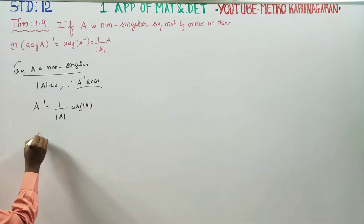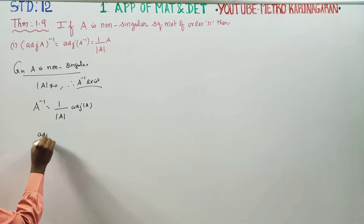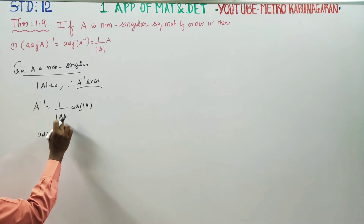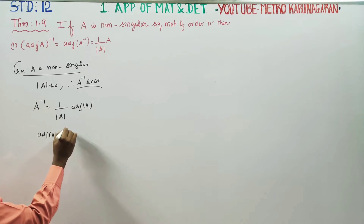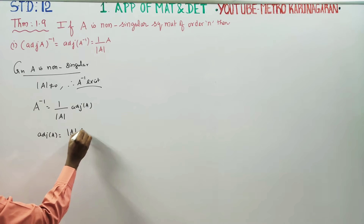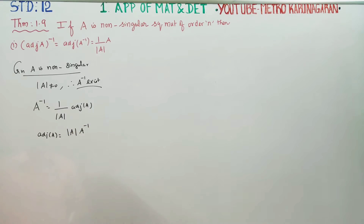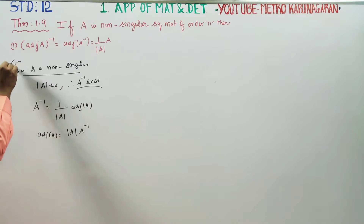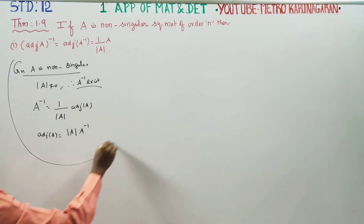Adjoint A is equal to determinant A into A inverse. This is the first piece of information.